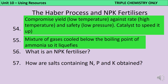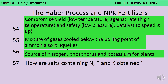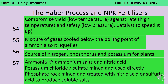An NPK fertiliser is sprayed on crops to help them grow better and make more protein. It contains the three elements nitrogen (N), phosphorus (P) and potassium (K). Ammonia is used to make ammonium salts and nitric acid, which supply the nitrogen. Potassium chloride and sulfate are present in rocks and can be mined and used directly. Phosphate rock can also be mined, but must be treated with nitric acid or sulfuric acid to make soluble salts before being used in the fertiliser.